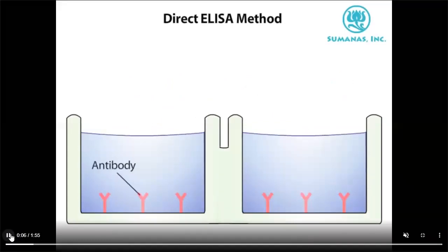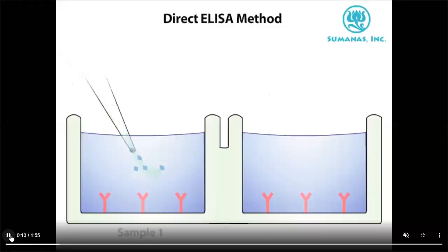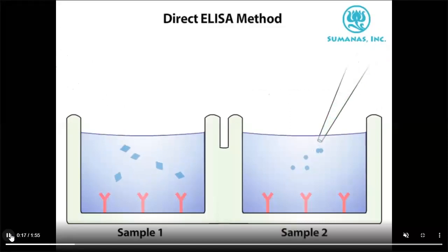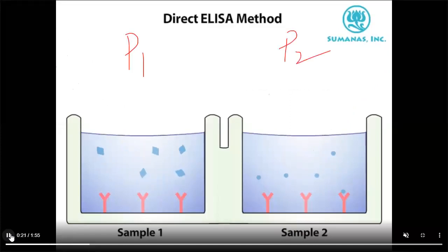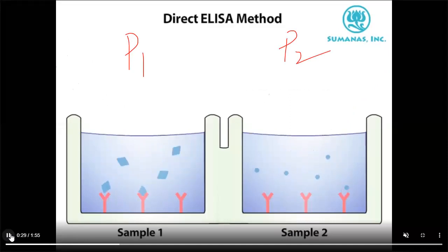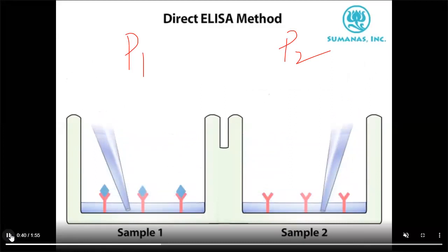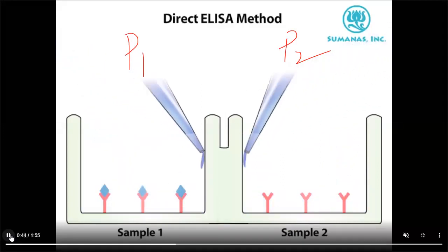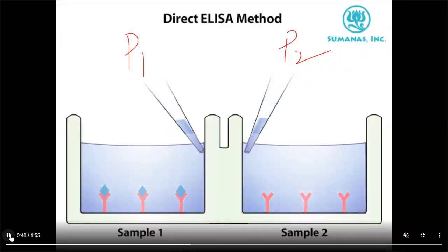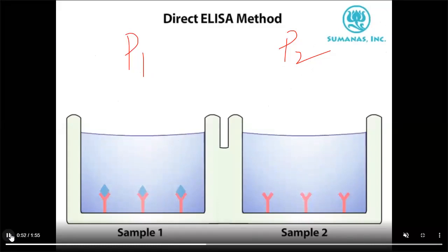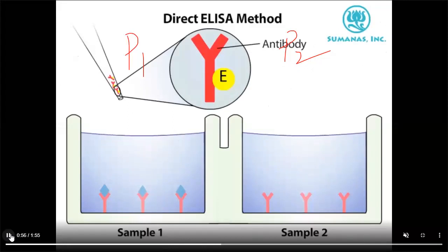Let me take a glance at this in diagrammatic format. Antibodies are attached to the microtiter well. Patient sample is added in both cases — patient 1 and patient 2. If antigen is present, it binds to the antibody. The free fluid is absorbed, then enzyme-linked antibodies are added. Antibodies linked with the enzyme are added.